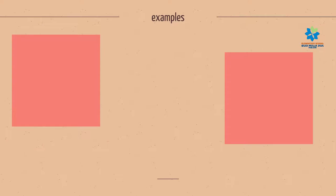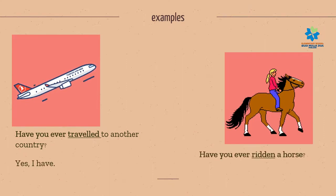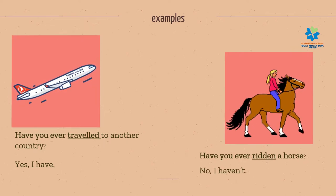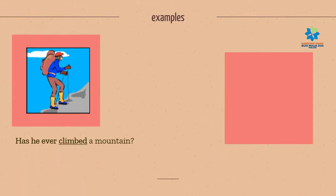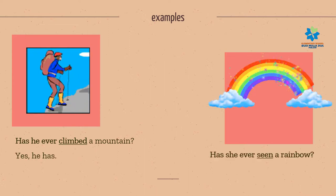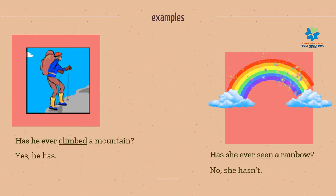Now, let's see the examples. Have you ever traveled to another country? Yes, I have. Have you ever ridden a horse? No, I haven't. Has he ever climbed a mountain? Yes, he has. Has he ever seen a rainbow? No, she hasn't.